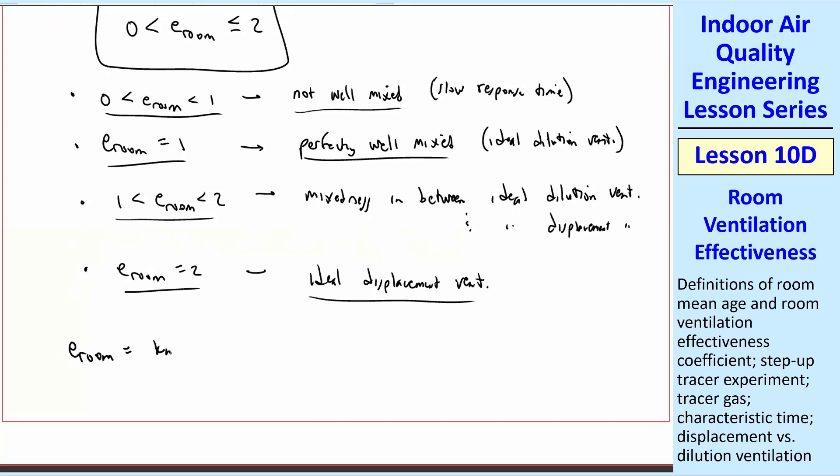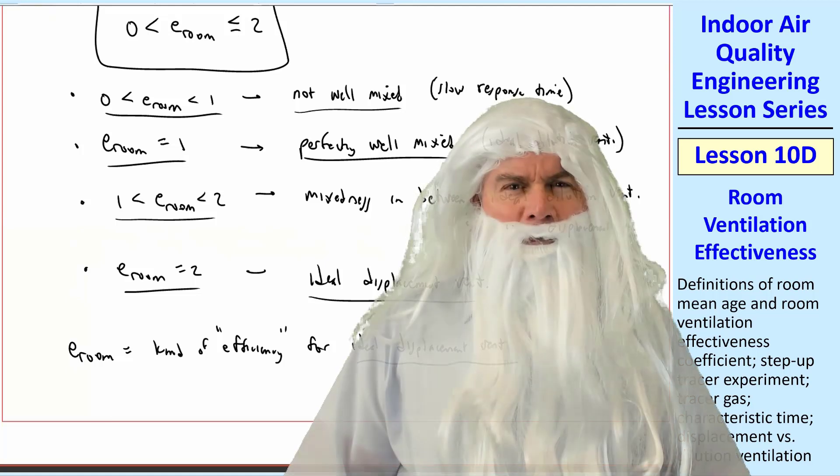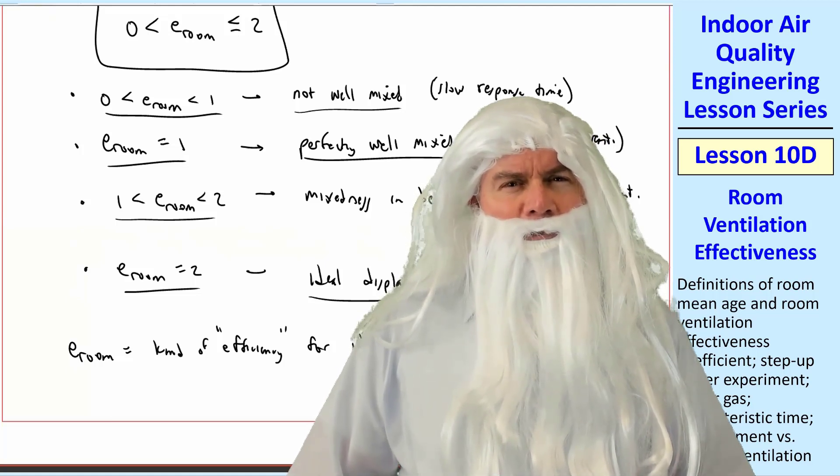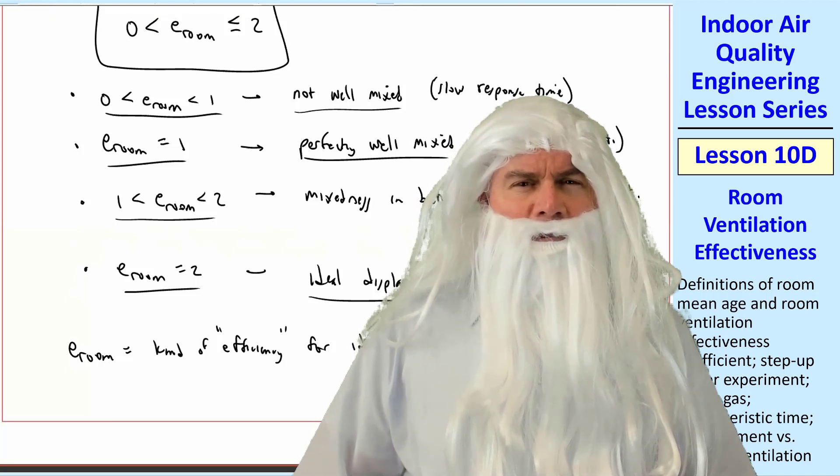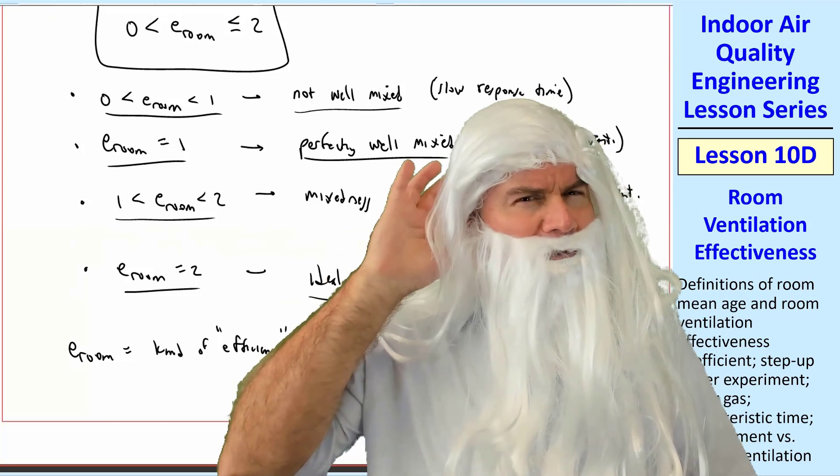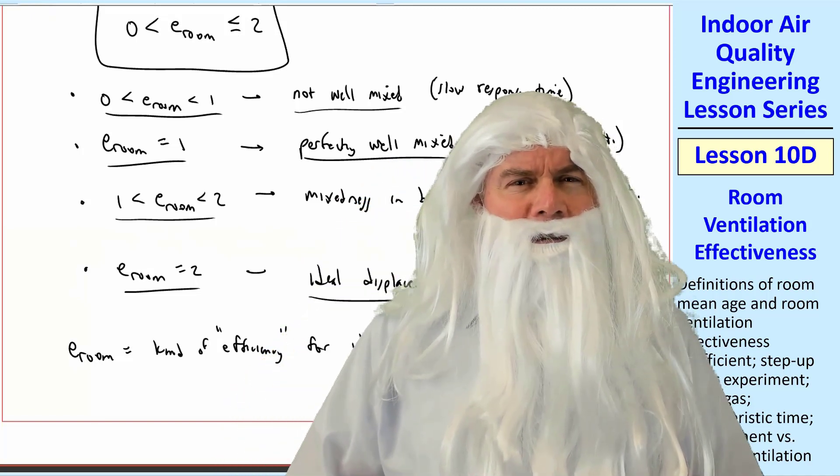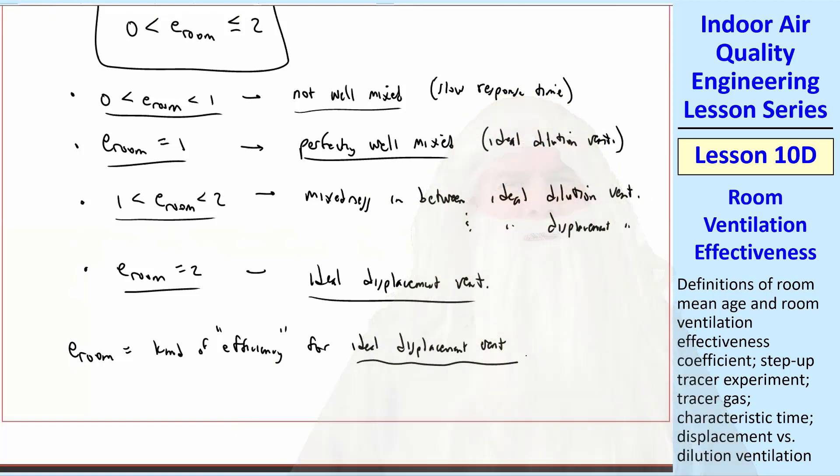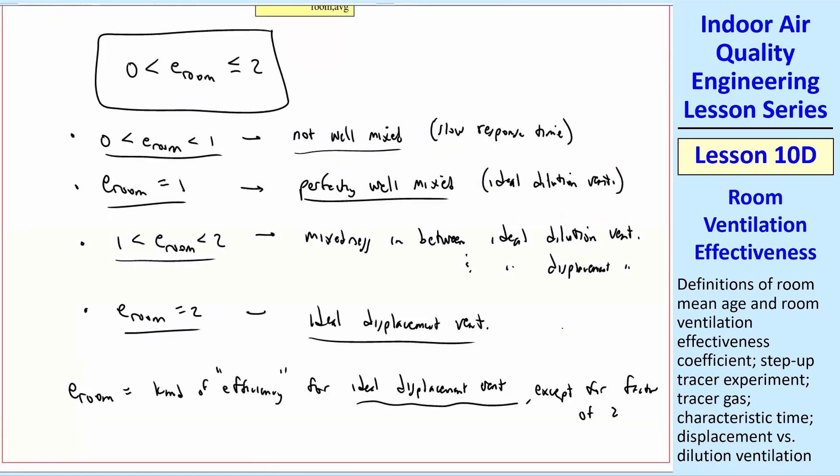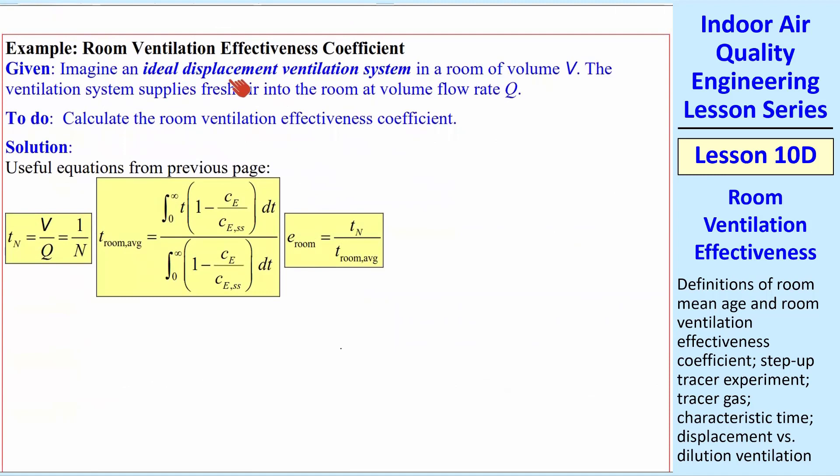You can think of E room sort of like an efficiency. It's an efficiency for ideal displacement ventilation. In other words, the bigger the number, the more closer it is to ideal displacement ventilation. But I thought all efficiencies go from 0 to 1. You're right, Pops. And I was just about to mention that. What'd you say? I said I was just about to mention that. Oh, okay. Thanks, Sonny. It's sort of like an efficiency for ideal displacement, if you call that best, except for a factor of 2.